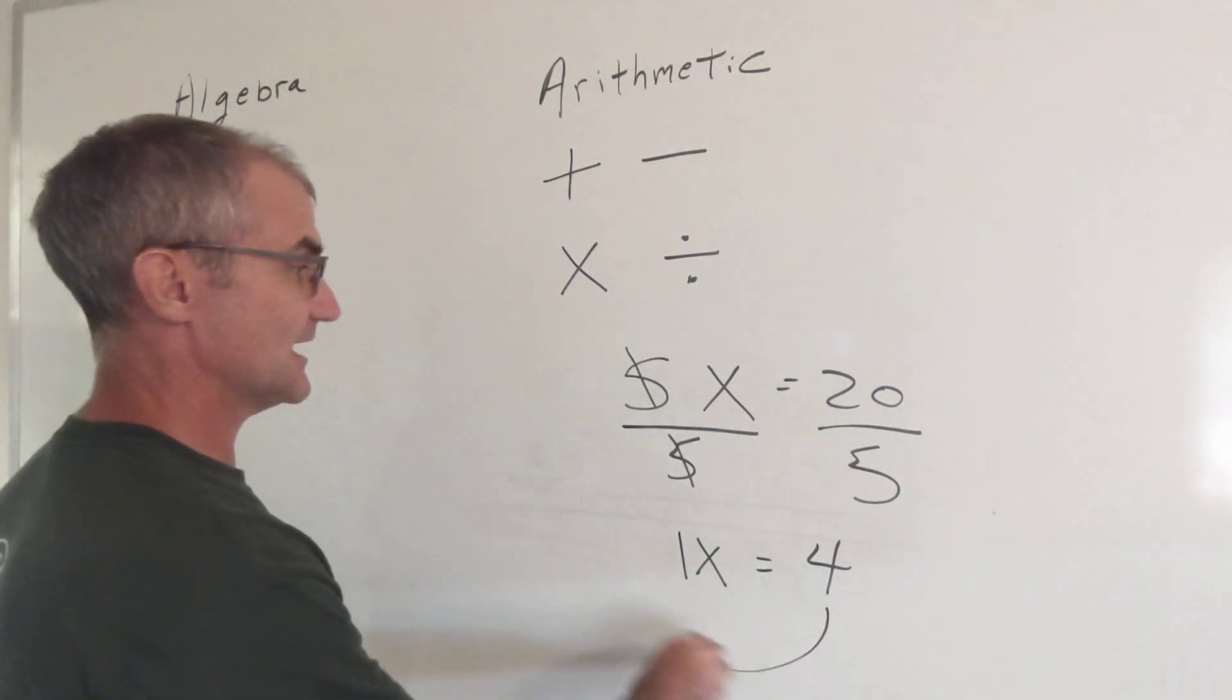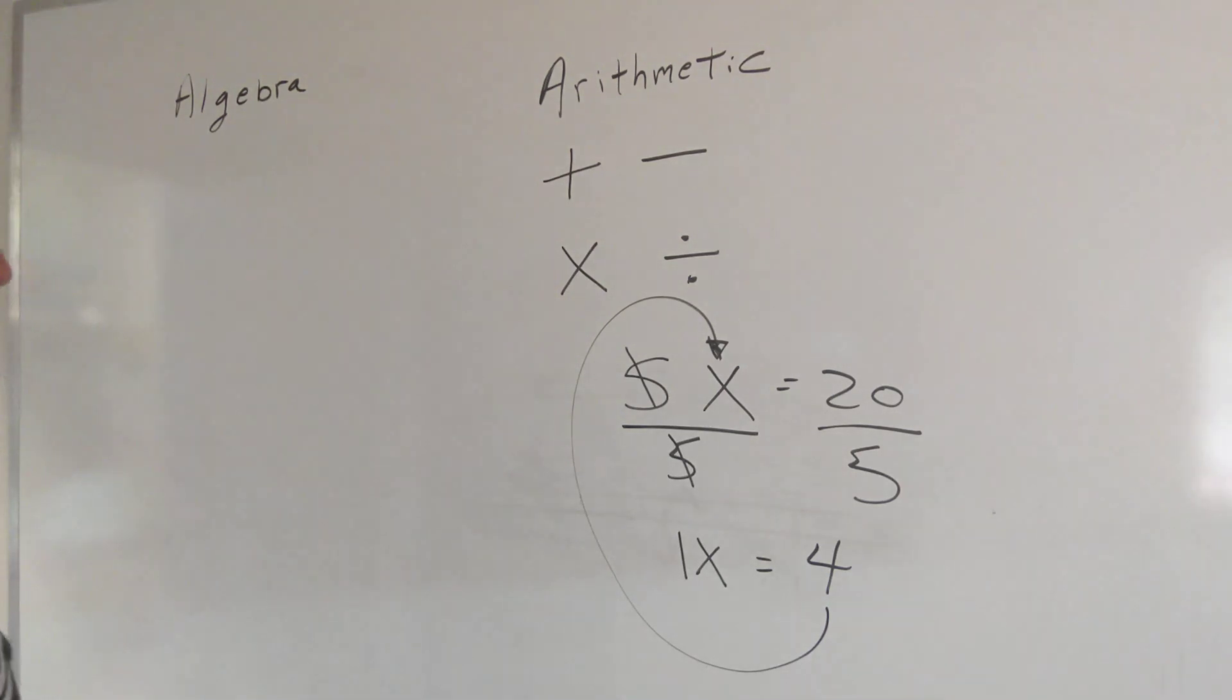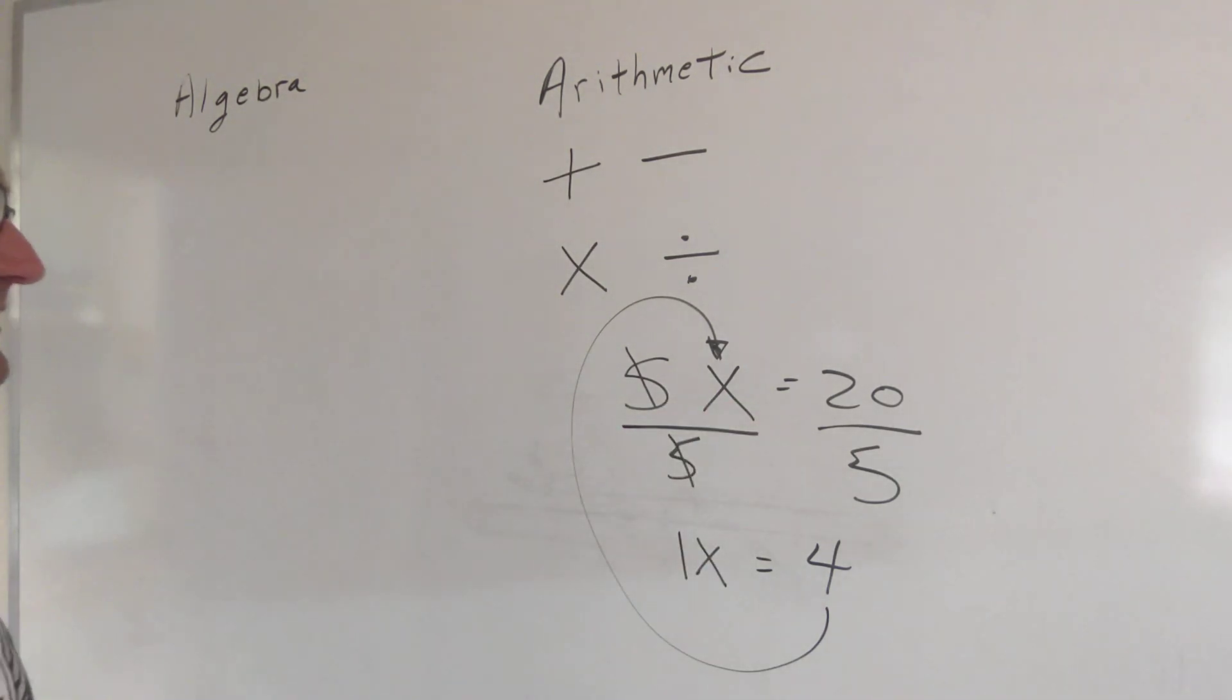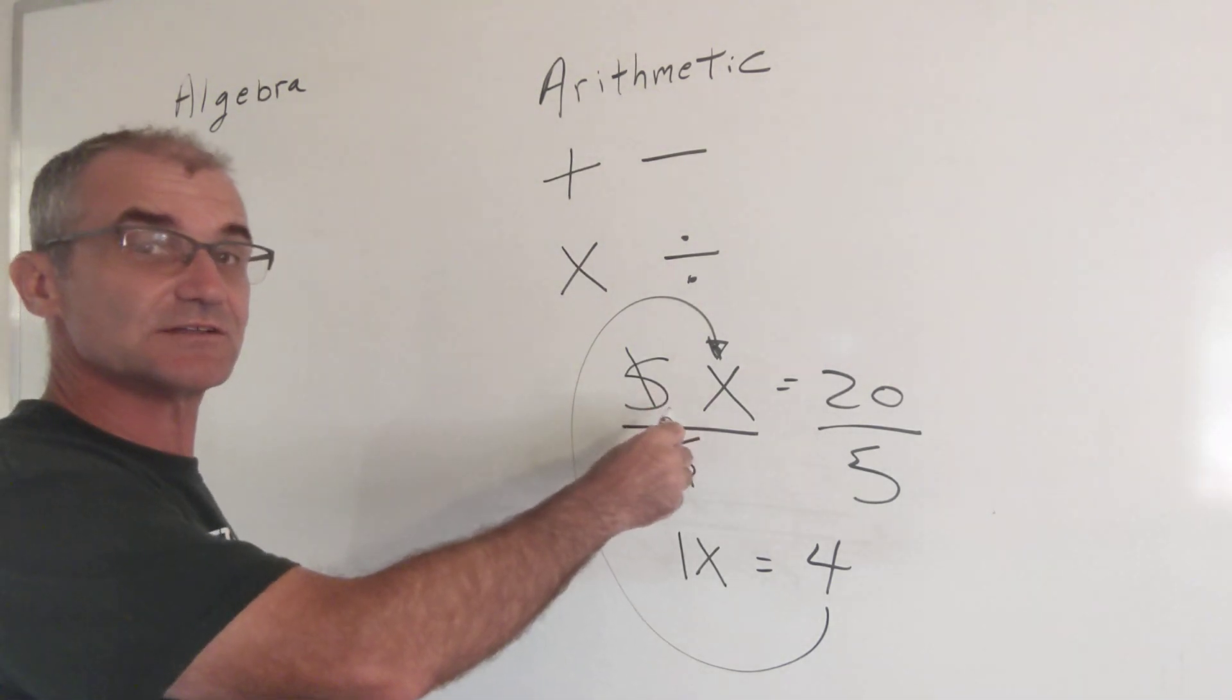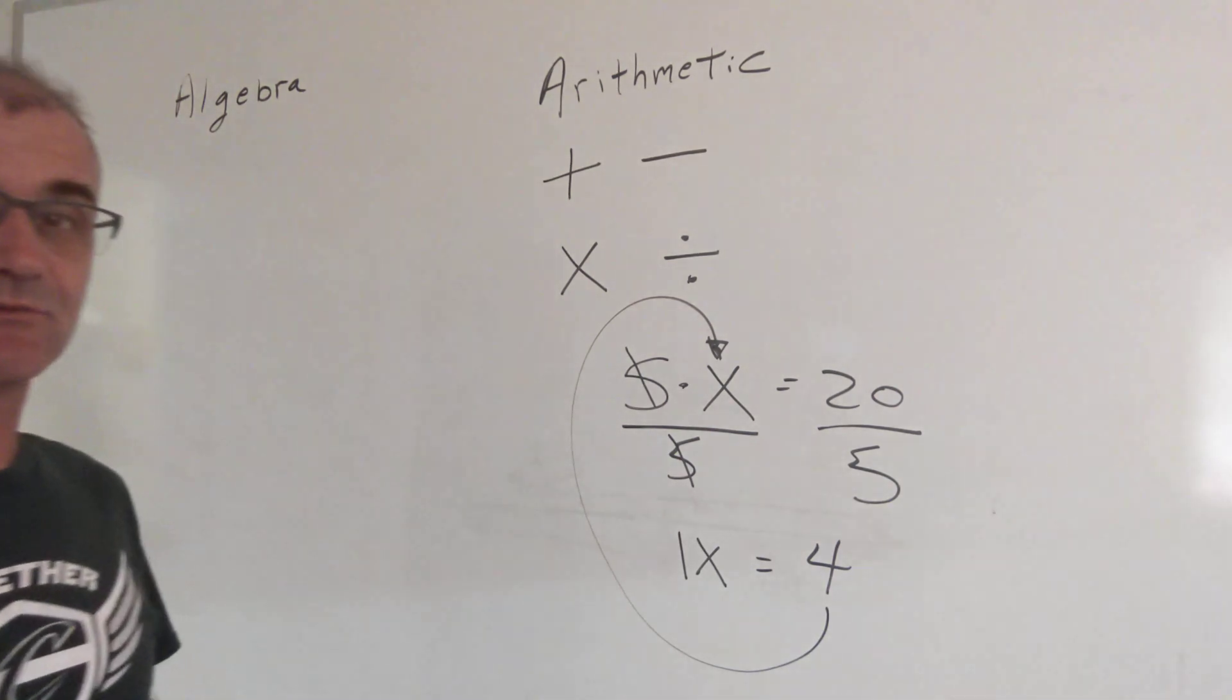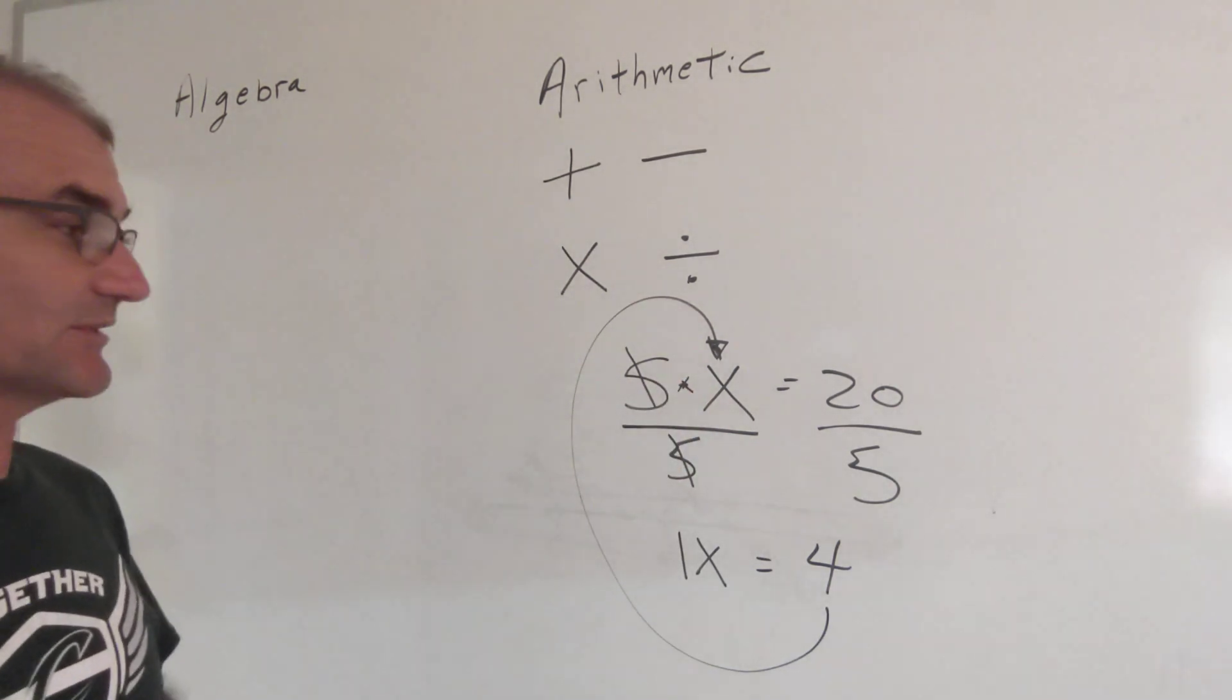The check of that is take that and plug it into there and see if it works. 5 times 4 is 20. That does work. If the two things are next to each other like this it means multiply. If there's a little dot in between them it means multiply or even a multiplication sign. All those mean the same thing.